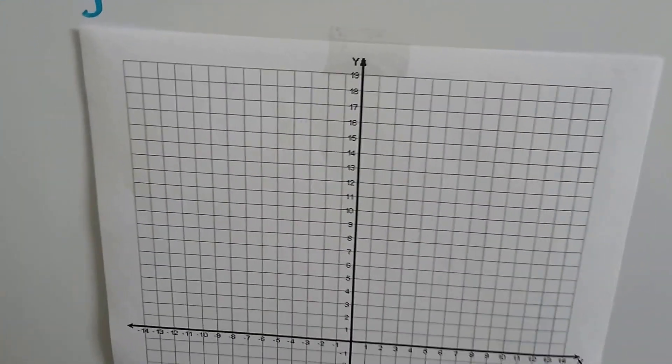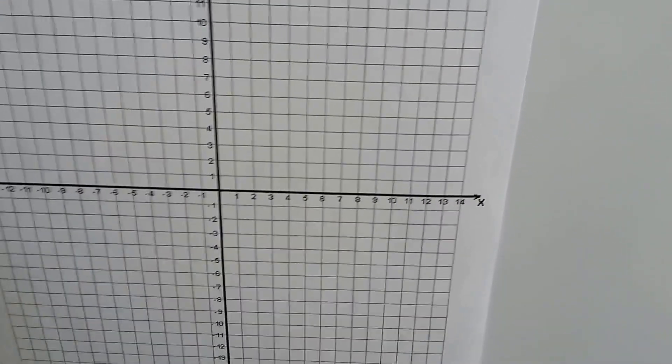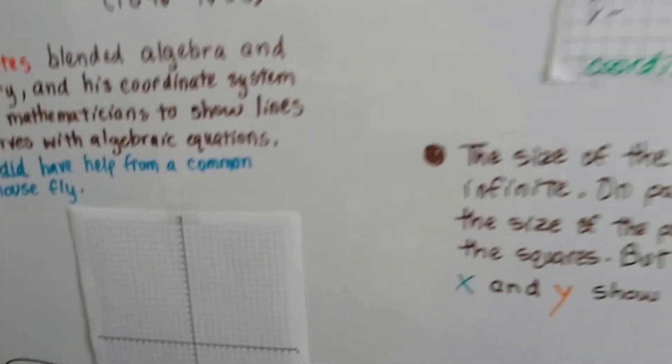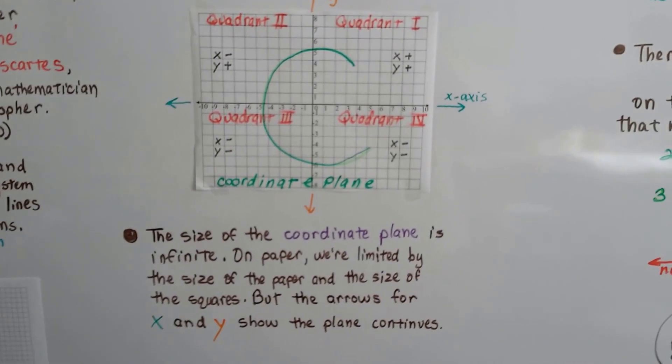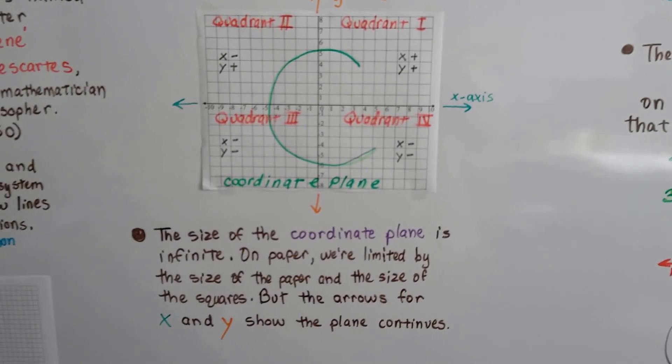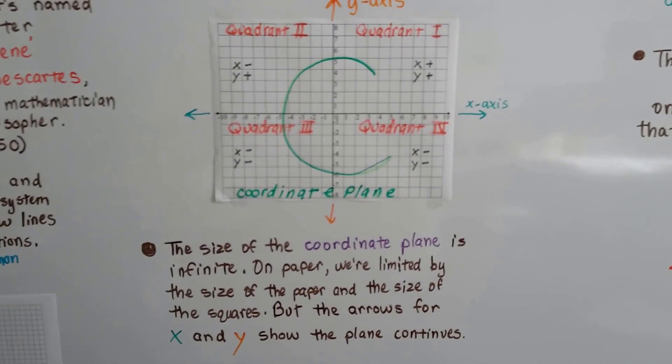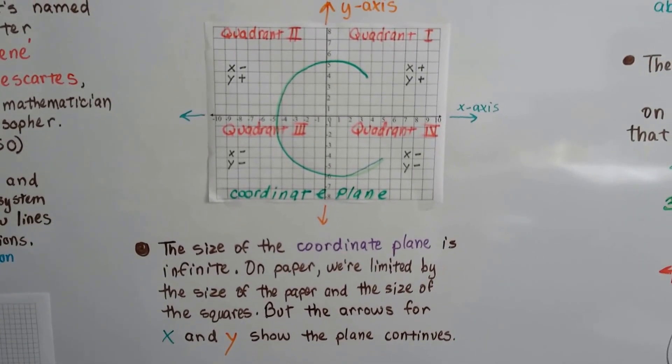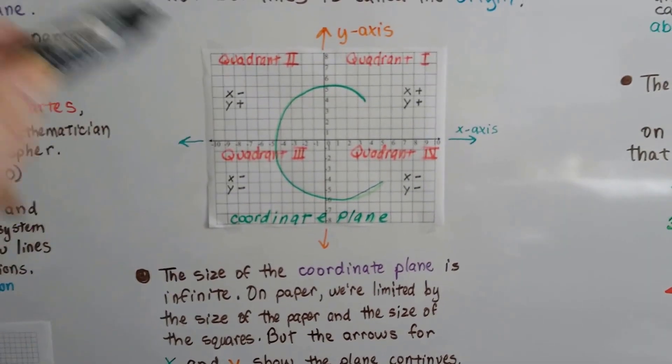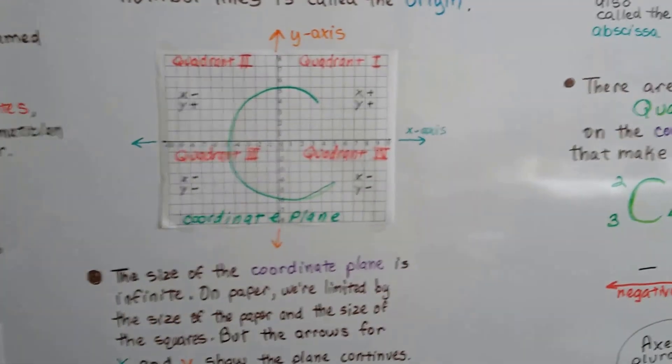Look at this one. This one's going up to 19 for the y, and it's going to 14 over here for the x. So it depends on the size of the squares and the size of the paper, but actually the coordinate plane goes on for infinity. Think of a huge open field that you can't see any trees or buildings in any direction, or a huge desert that is flat and in all directions just goes on forever and ever. Even up, going on an angle this way from all points, it just goes in every direction.